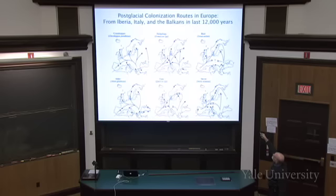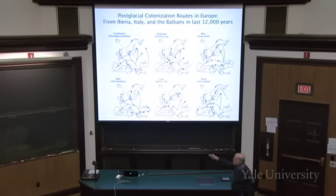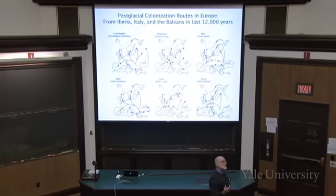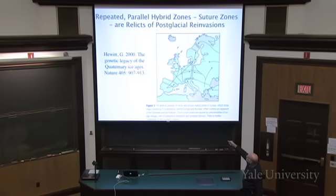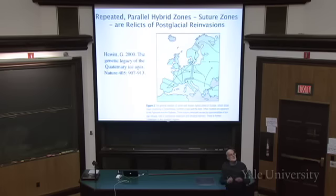Up in northern Sweden the bears met some bears that had probably been in the Ukraine and had come out from north of the Black Sea. So it is possible using mitochondrial DNA molecular phylogenies to reconstruct the recent history of movements of animals across the planet, and to understand why there are certain places where we see hybrid zones — places where populations are coming back together that had been isolated during the Ice Ages.